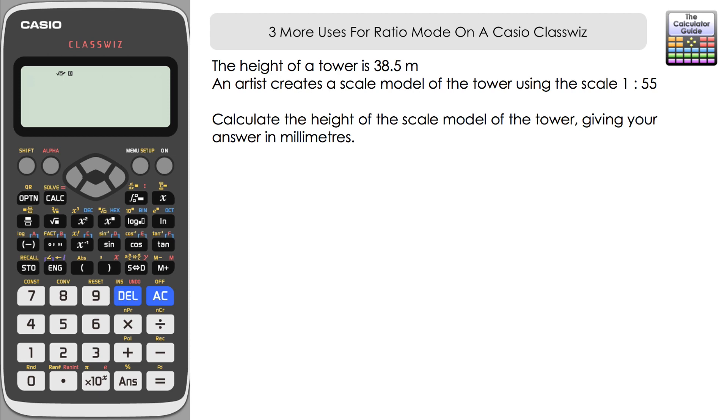I'm doing this on a Casio ClassWiz FX991EX. You could do it on any model that has the ratio mode on it. You just need to find it and on the 991EX it's option C from the menu, C ratio. And then we've got two choices. For the first question we're going to choose option 1, A to B equals X to D.